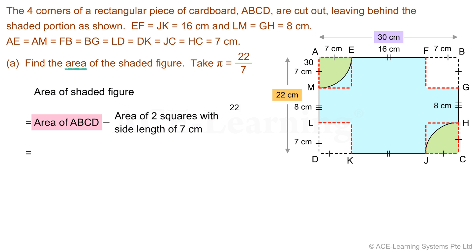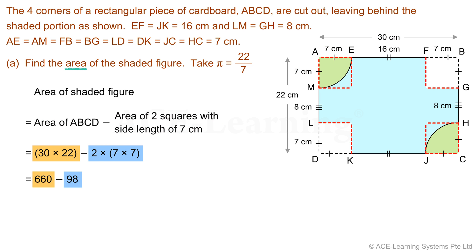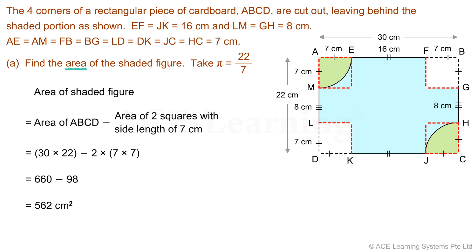Now that we have the necessary dimensions, we can find the area of the shaded figure. The area of the rectangle is 30 times 22. We have to subtract from it the area of two 7 cm squares. Evaluating, we have an area of 562 square centimeters. Is this answer correct? Let's find out in the final step.